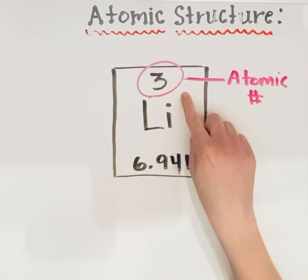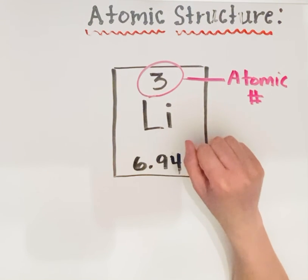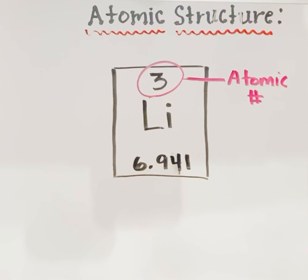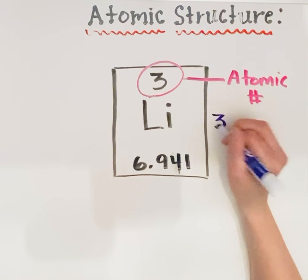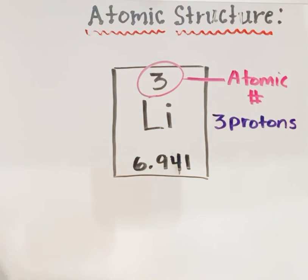So what this is telling me is that lithium has three protons and also three electrons. Each stable atom of any element has to have the same number of protons as it does electrons. Because protons are positive and electrons are negative, the protons balance out the electrons, so each atom has a neutral charge. Neutrons don't have any charge, so they're not going to affect the number of protons nor the number of electrons. For one atom of lithium, the atomic number tells us it has three protons and three electrons.